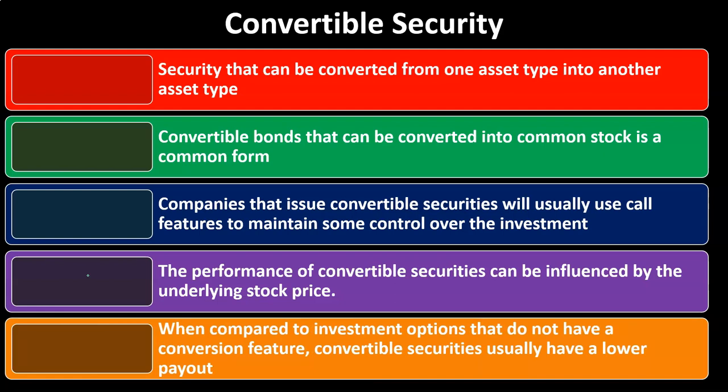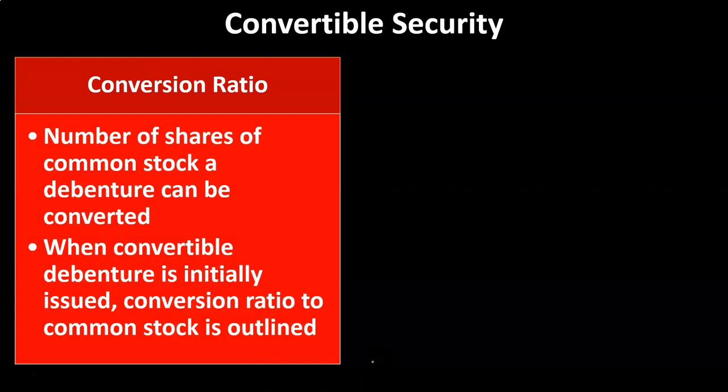When compared to investment options that do not have a convertible feature, convertible securities usually have a lower payout. If I'm the company issuing the convertible bonds, the conversion feature means there's more security to the investor on the downside — they're open to the upside if the stock price goes up and they can convert, while on the downside they still have the bond. That flexibility usually means the issuer can offer lesser interest payments, which is beneficial to the corporation.